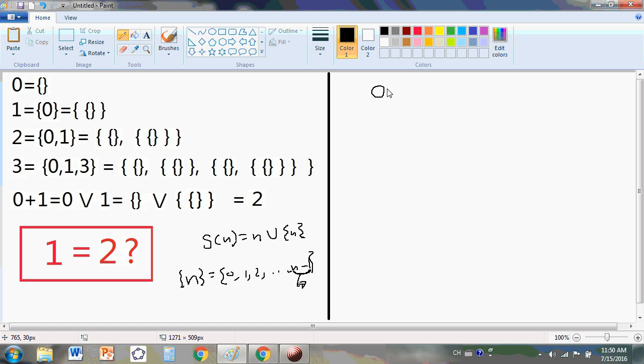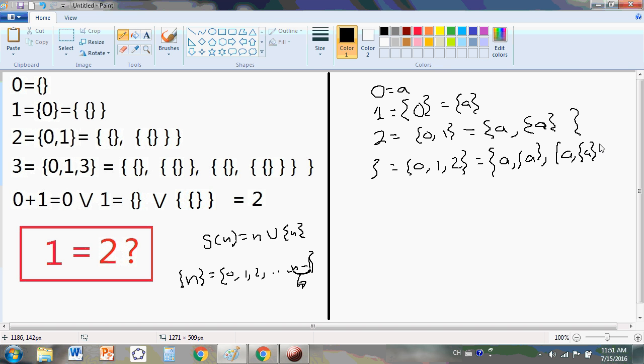This whole thing doesn't really define natural numbers because you could use anything here instead of digits. You could say, for example, 0 is equal to a, and then 1 is equal to {0} is equal to {a}, and 2 is equal to {0, 1} is equal to {a, {a}} and so on. There's nothing here that guarantees that these elements even have a relationship between them that indicates anything other apart from containment. There is nothing here that indicates the main property of the natural numbers, which is the fact that they have a difference of one between each successive natural number. This tells you nothing about natural numbers. You can put anything you like in there.